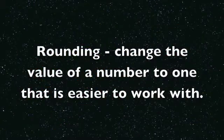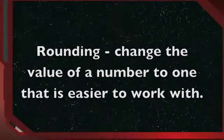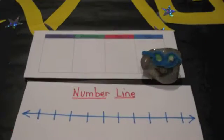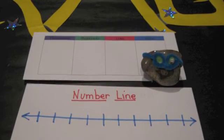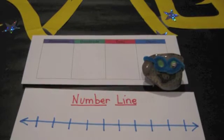Rounding numbers means you change the value of a number to one that is easier to work with. We'll learn two ways for rounding, one using a place value chart and the other using a number line.